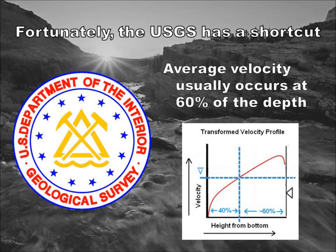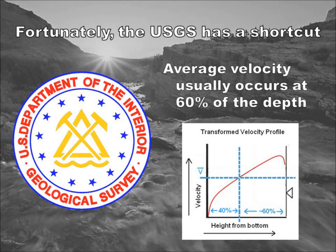The United States Geological Survey has measured thousands and thousands of streams, representing a sufficiently large sample size with which to make a generalization. The data shows that more often than not, the average velocity will occur at 60% of the depth of a stream. This means we don't even have to bother with the mean value theorem in most cases to get a good idea of how fast the water is moving.